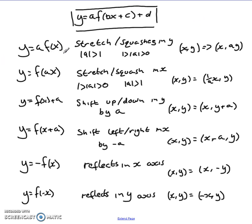We've got y equals a f of x and what this does is affects the graph by stretching or squashing it in y. If the size of a is bigger than 1, it stretches it in y, and if it's between 1 and 0 it squashes it. The point would change from x, y to x comma a y.